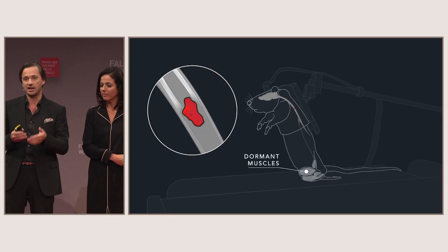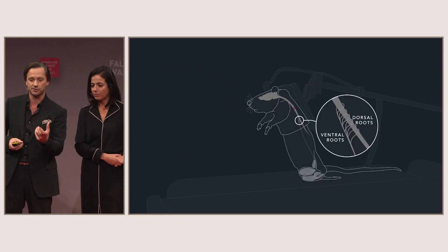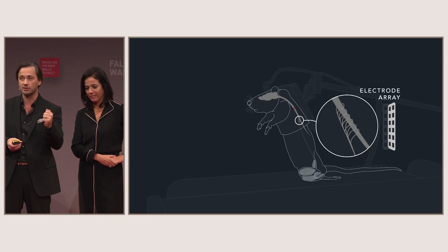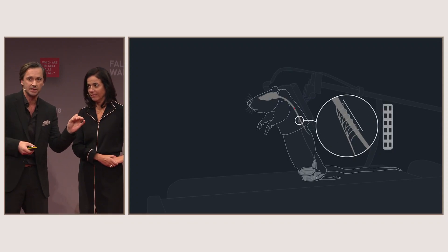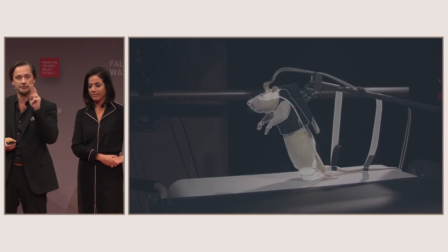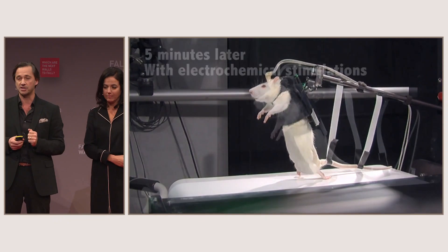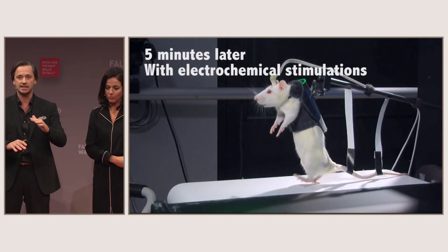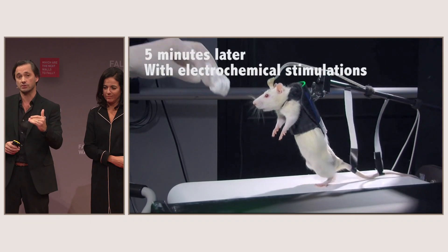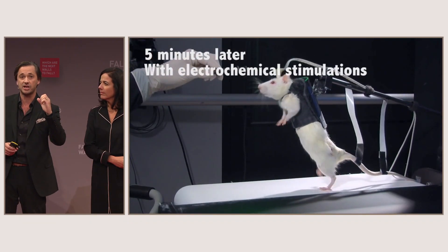Those nerve connections are functionally silent. This means the muscles are also dormant, and the region that controls leg muscles is also inactive. So to reactivate the spinal cord, we apply electrical stimulation. That will have two effects: first, it will reactivate the dormant spinal cord so the animal will immediately start moving, and it will also enable these residual fibers to become functional.